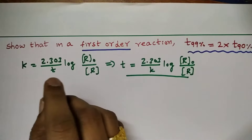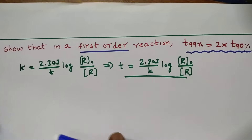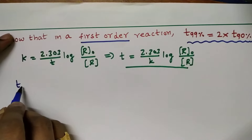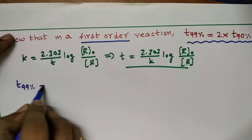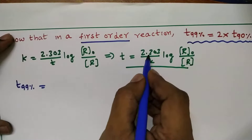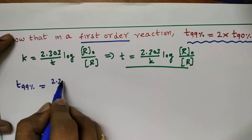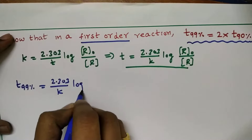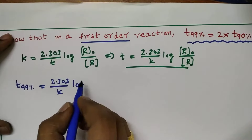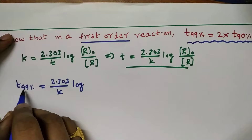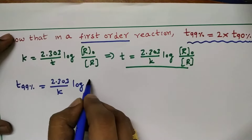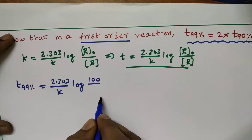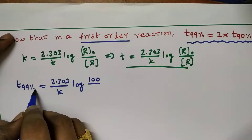Now, using this formula, let us find t99%. We write: t99% = 2.303/k × log(initial concentration / remaining concentration). We are taking concentrations in percentage, so the initial concentration is 100.